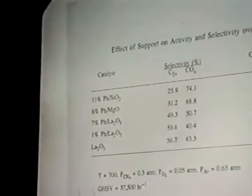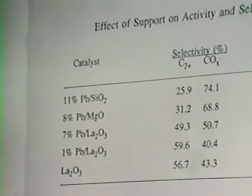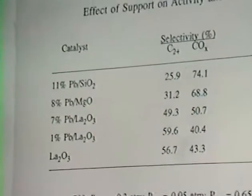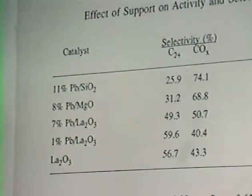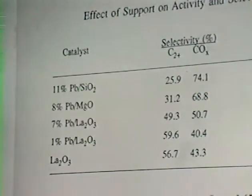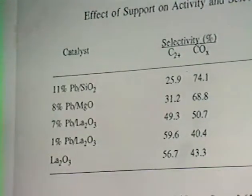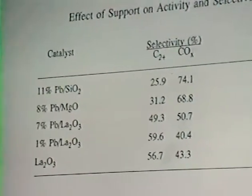So this is the first thing we did: we took what Hinsen and Barron thought was the active catalyst and put it on several different oxide supports. And what I want to draw your attention to are the last three catalysts there: seven, one, and zero percent lead on lanthanum oxide. And in the next column, you'll see selectivity, which is the amount of methane converted into C2, that's ethylene, ethane, and higher hydrocarbons.